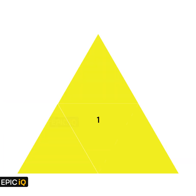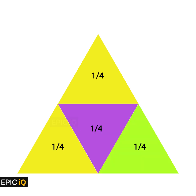Now there is one more simple visualization to prove this result. This time we use a triangle of area 1. So the sum of the areas of all the smaller triangles within this big triangle will also be 1. Just as we did with the square, we divide this triangle into 4 triangles of equal area. Now the triangle at the top has area equal to 1/4.